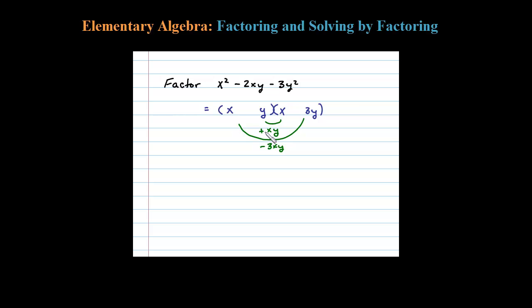1xy minus 3xy is negative 2xy. Okay, so that tells me the y here has to be positive and 3y here has to be negative. You always have to check your end term, the sign of your end terms.